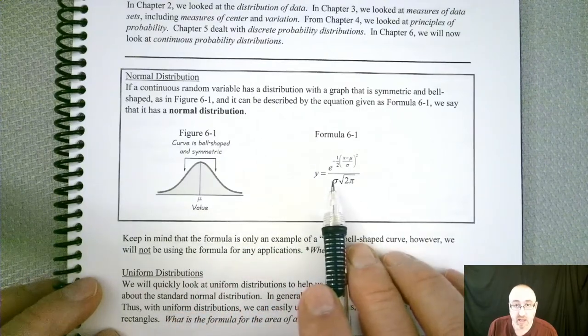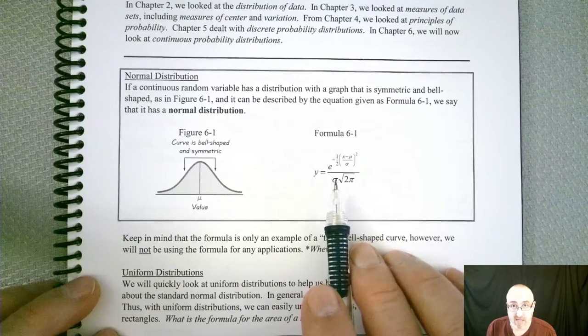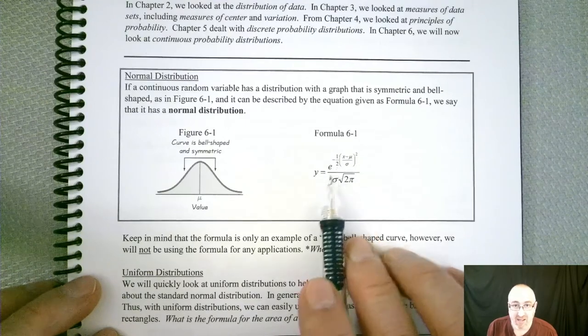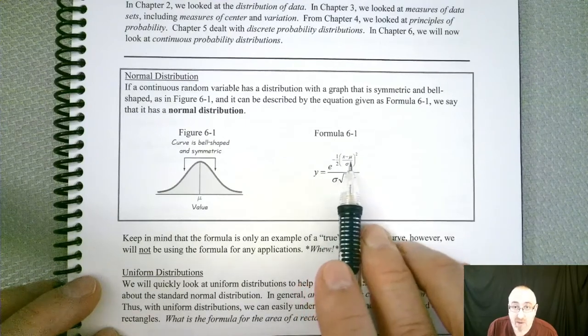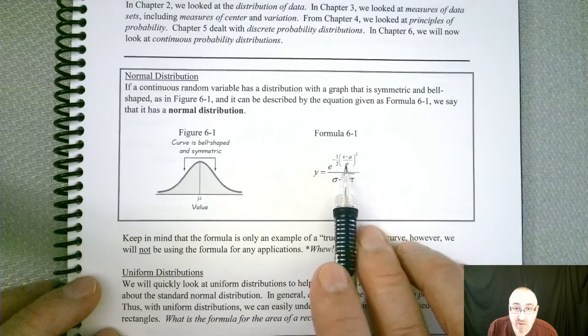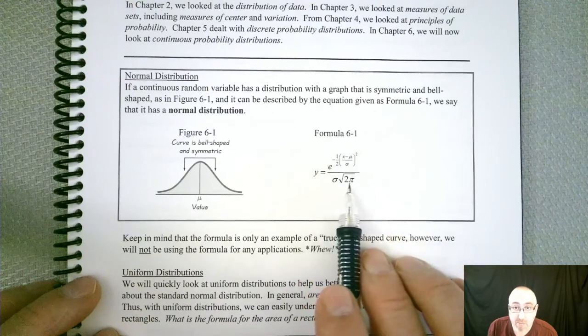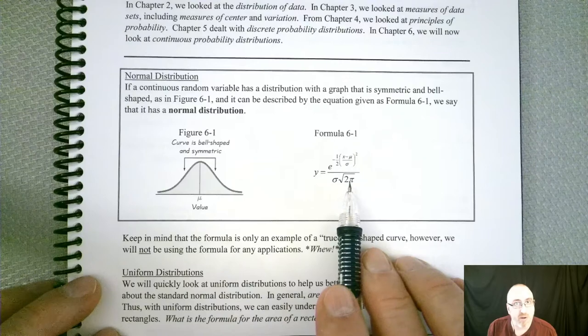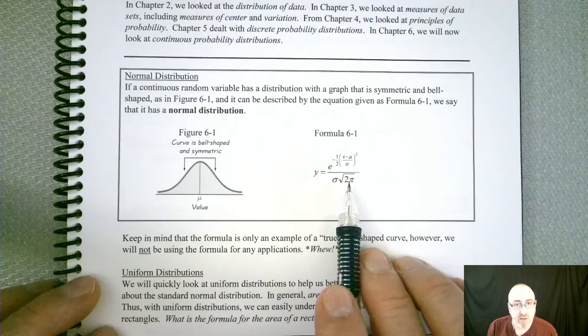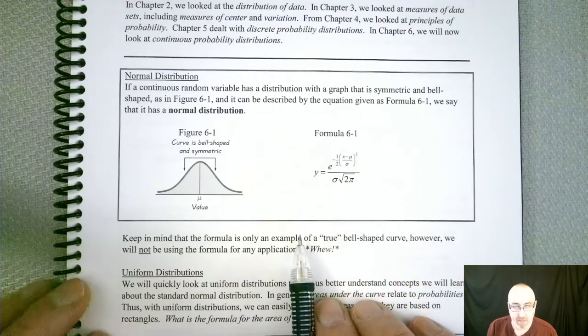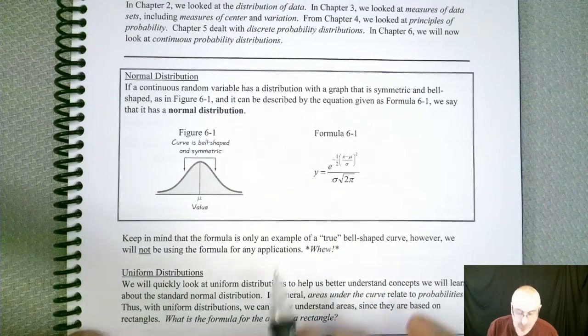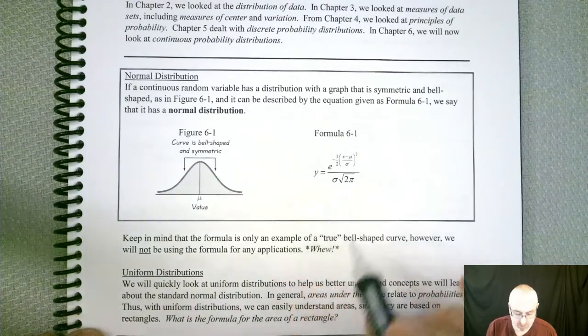Now the formula, you can see, is pretty messy. It's got a lot. It's got an E, it's got some... You see the mean and standard deviations in there? We got an X, and we got pi in there. Pretty crazy. But breathe a sigh of relief, we are not going to be using it. Yay! So no, we are not going to be using this formula. So don't freak out.